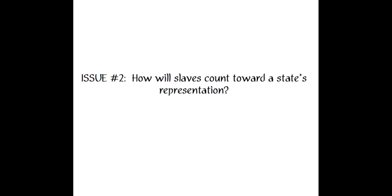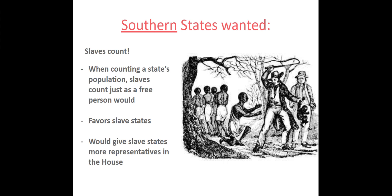What the southern states wanted was for enslaved people to count fully. When counting a state's population, enslaved individuals would count just as much as a free person. So if a state had a free population of 30 and an enslaved population of 30, both groups would be evenly counted. This gave considerable favor to slave states and would ultimately give them more representatives in the House.